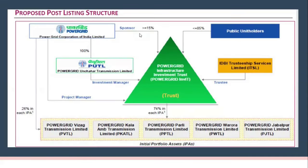The structure of the InvIT at the time of IPO showed that the Power Grid InvIT — as sponsor — held something like 15%, with the rest for public unit holders. A trust was created that held various SPVs under which assets were held. This is how the structure of PG InvIT panned out after the IPO.